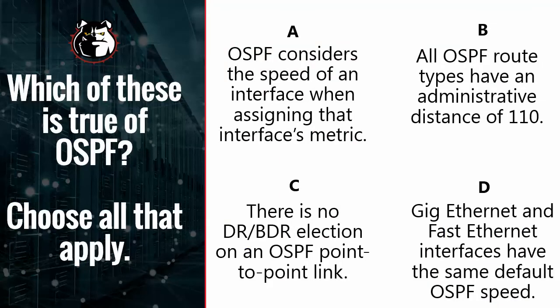Now let's go through the answers one by one. A: OSPF considers the speed of an interface when assigning that interface's metric — that is absolutely true. The reason I call this 'The Cost of Greatness' is to remind you that the metric assigned to an interface in OSPF is called cost. The words cost and metric get used interchangeably, but on your exam and in Cisco world, OSPF metric equals cost.